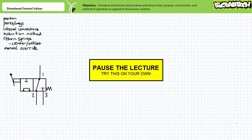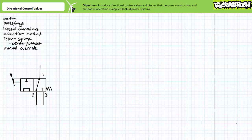This is a two-position, three-way manually actuated directional control valve, spring-offset to a deactivated position that blocks flow at port three and allows bidirectional flow from one to two. In its activated state, it allows bidirectional flow from two to three and blocks flow at one. Given these arrows are bidirectional, consider a couple of creative ways this valve can be put to use.